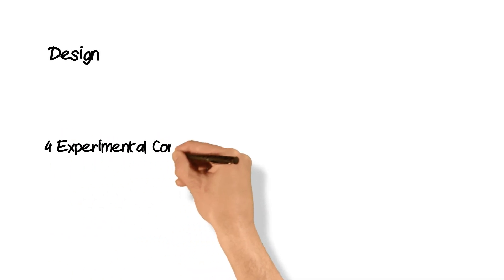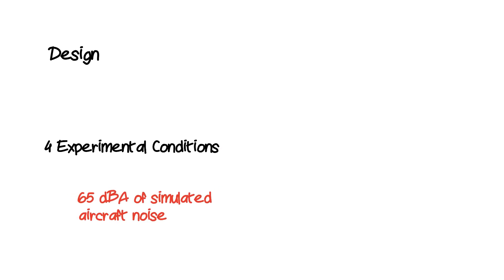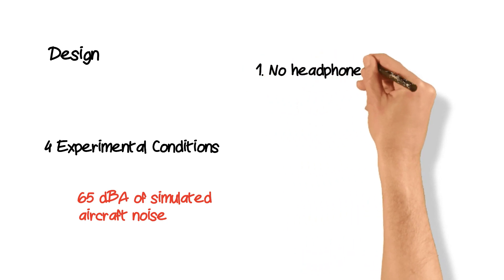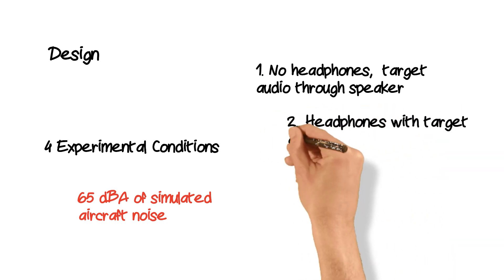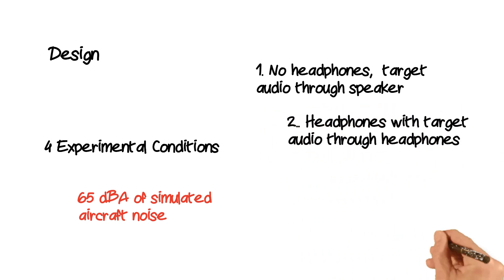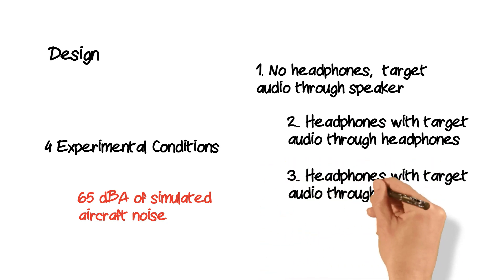Four experimental conditions were presented with simulated in-cabin aircraft noise at 65 decibels. In condition one, no headphones were provided and the target audio was presented through an external speaker. In condition two, noise cancelling headphones were used and the target audio was presented through the headphones. In condition three, noise cancelling headphones were used but the target audio was presented through an external speaker.